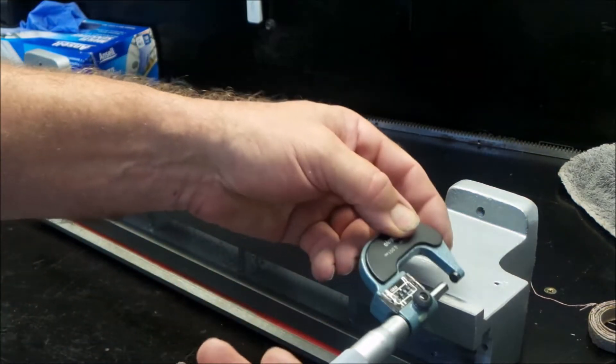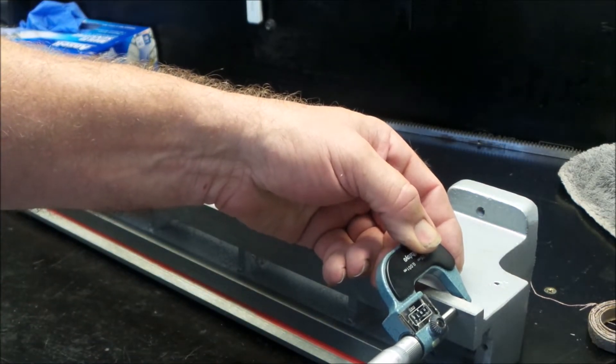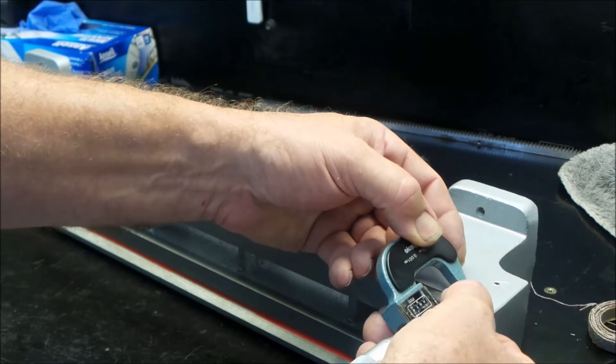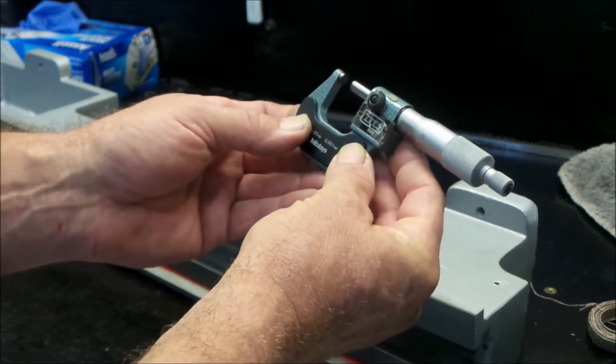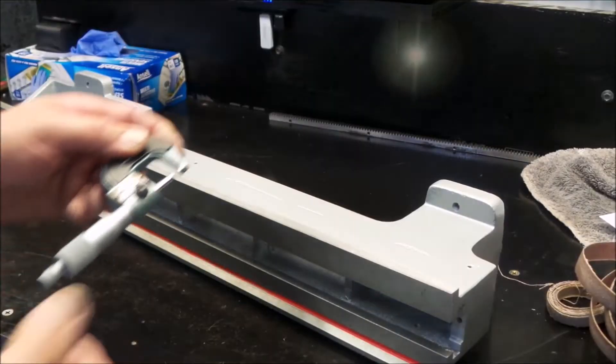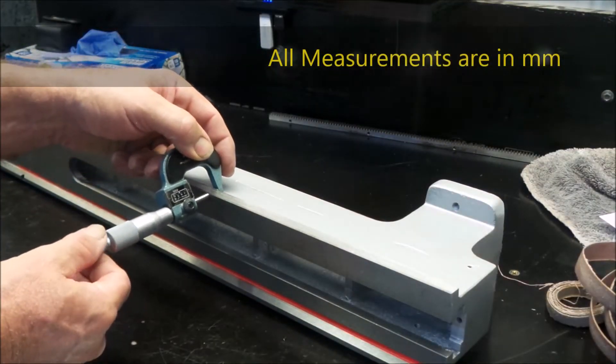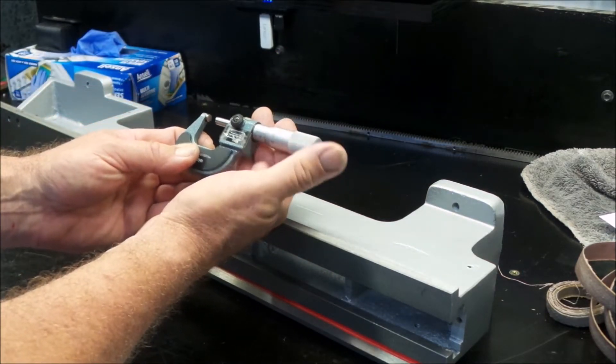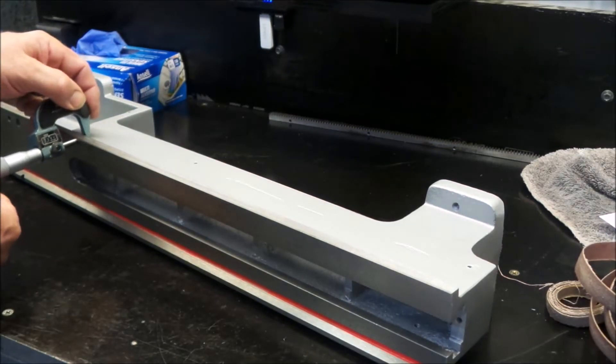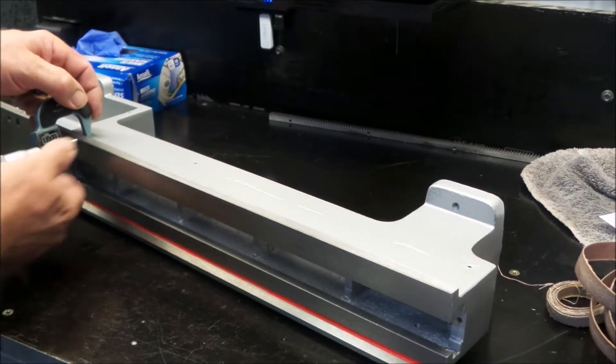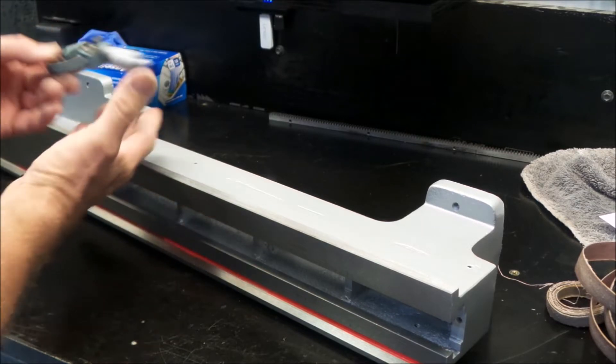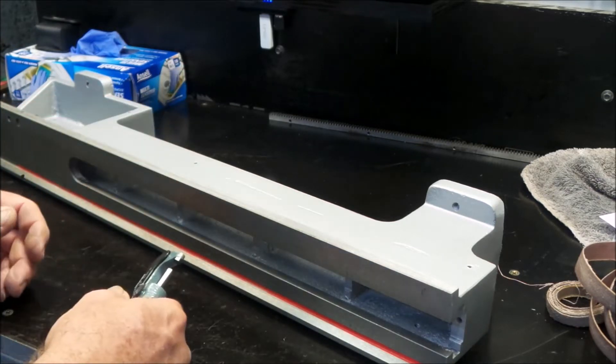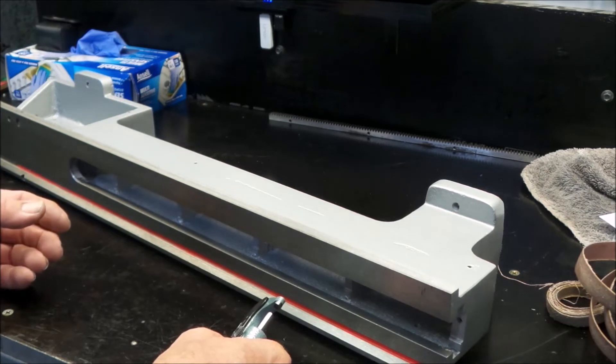On the rear way we start off with a thickness of 9.15, center 9.22, and on the end 9.24. So as you can see it's getting thicker as it moves along.